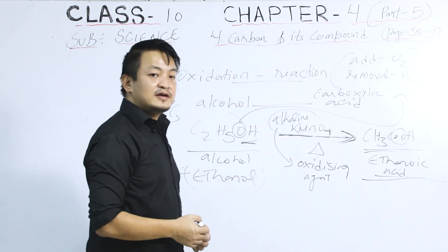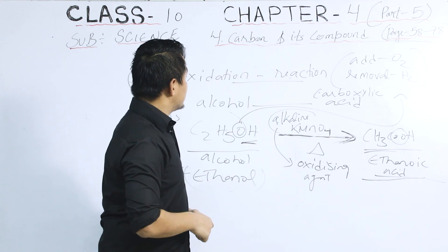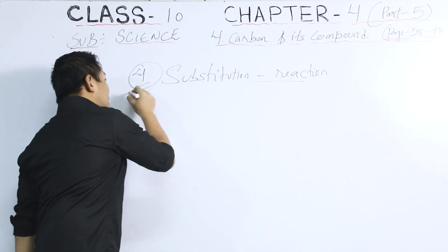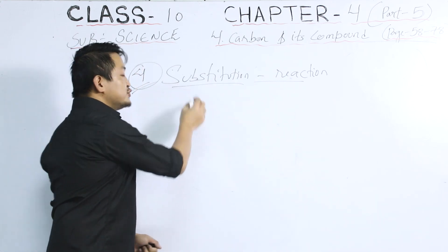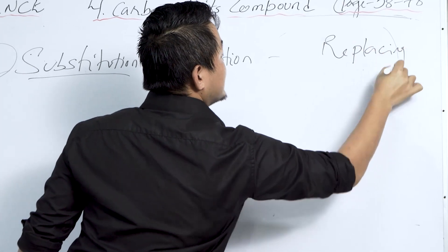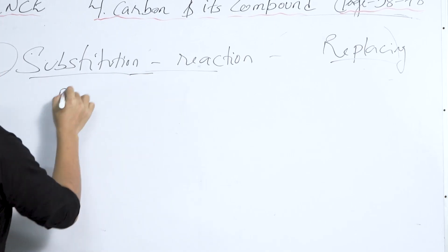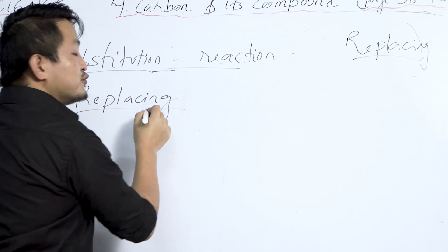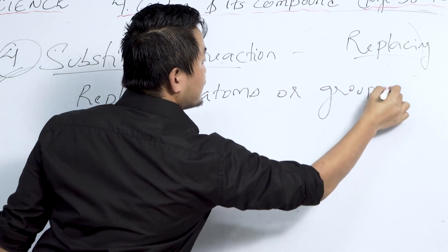Now we move to the last type of chemical property for carbon — substitution reaction. From the word itself, substitution means we are going to replace. There is a replacing or replacement taking place between atoms and a group of atoms in a compound.